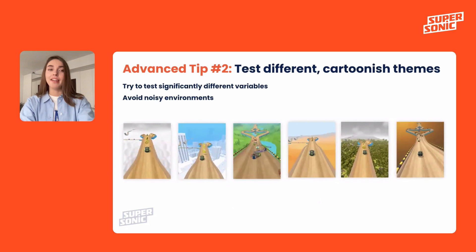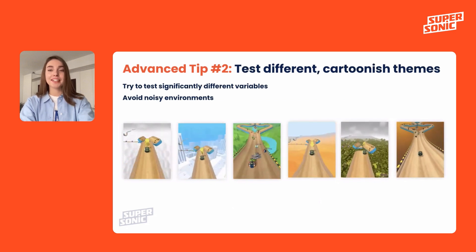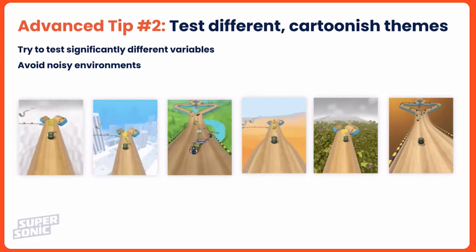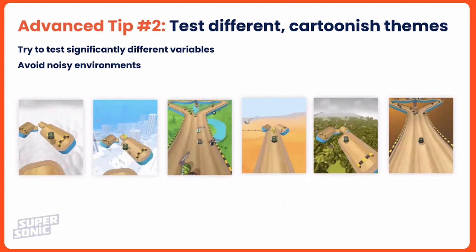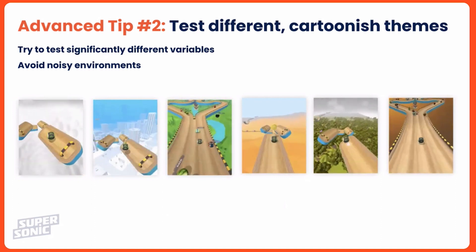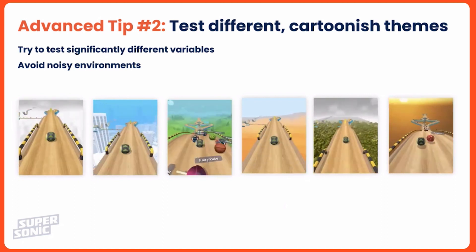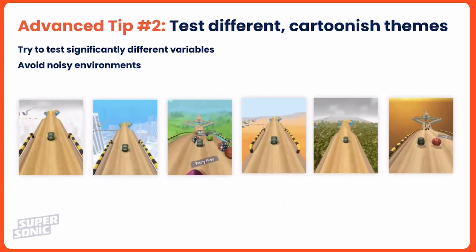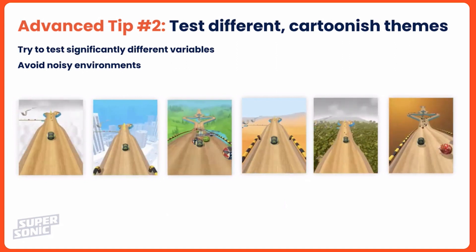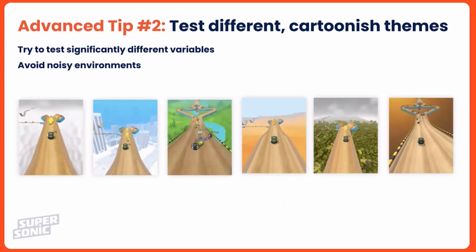Advanced tip number two: test different cartoonish environments. Try to test significantly different variables, which can also provide users with a new experience. It could be a natural sky, city, forest, or desert. You could also try a close environment like a room. At the same time, try to avoid noisy environments because we should keep focus on gameplay. Also note that sci-fi and space environments don't usually work well for a broader audience, so keep that in mind.